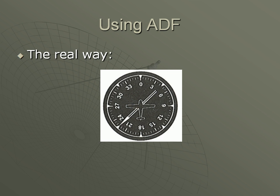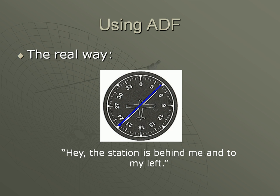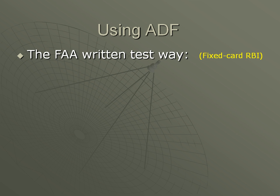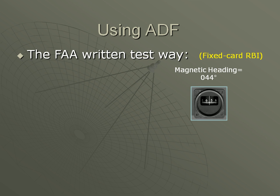VFR, this is all you need. If you're studying for a written or practical test, you'll need to be able to do more. How you read the instrument depends on which type you're using. Remembering that a fixed card RBI doesn't give us heading, we should first check our compass. In this example, our aircraft has a magnetic heading of 044, or northeast. It's often useful when navigating to visualize the overhead situation, so that's what we'll do here.